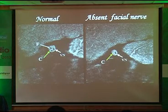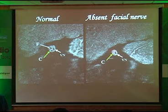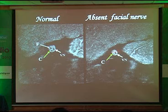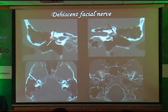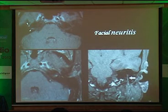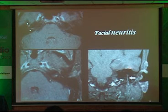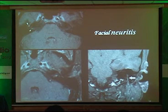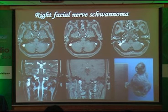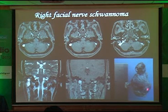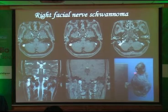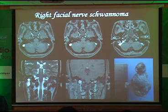Facial nerve — last three slides. Cochlear and facial nerves should be of the same size; this patient has absence of the facial nerve superiorly — no facial nerve, while the vestibulocochlear nerve is seen. Dehiscent facial nerve: there is no bony covering for the tympanic portion of the facial nerve, which is exposed. Facial neuritis can enhance on MR — you see enhancement of the mastoid and labyrinthine portions. A facial nerve neuroma showed an hourglass shape with the mastoid portion involved, extending into the parapharyngeal space through the stylomastoid foramen.